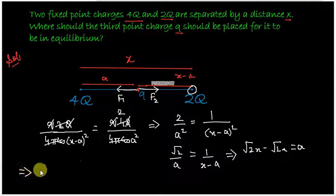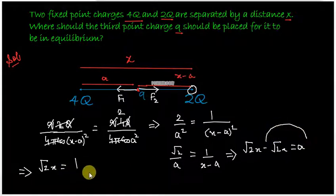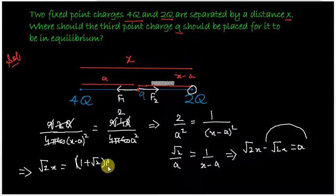On rearranging the terms, √2·x equals (1 plus √2)·a.